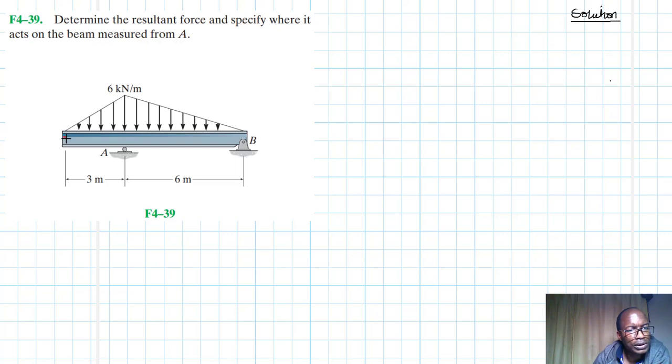Let's call this point C, so from C to A we have one triangular distributed load and from A to B we have another one.